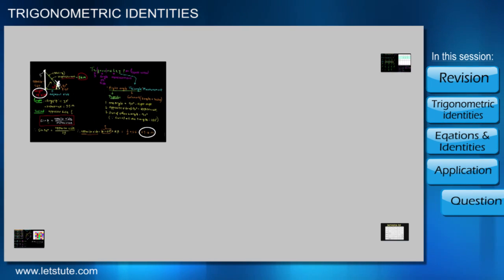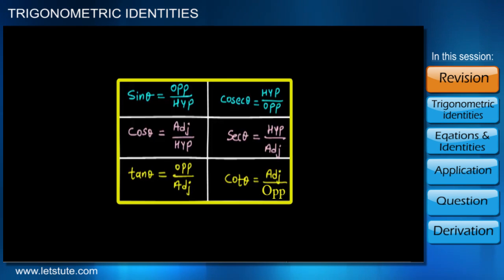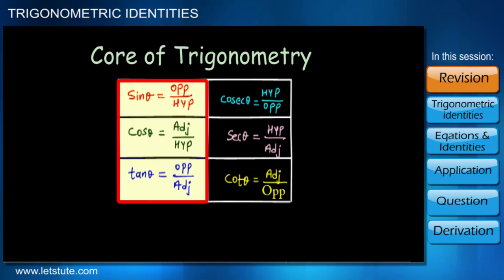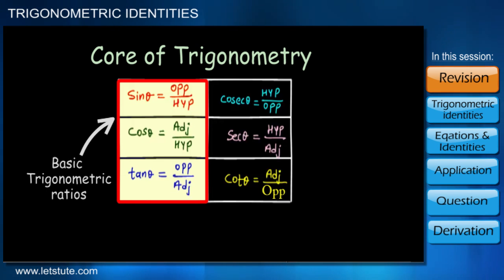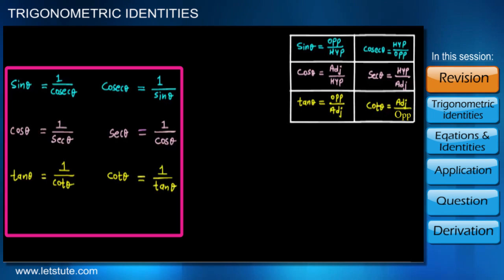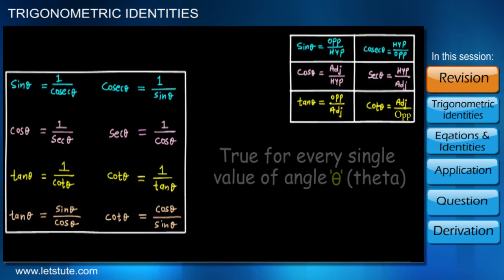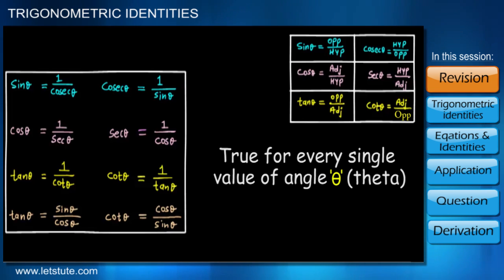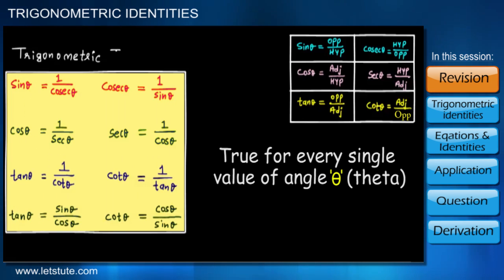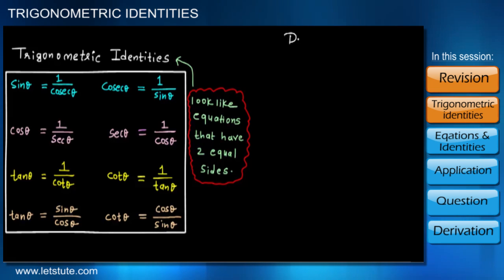In our previous sessions we have learned many things in trigonometry. We have understood that these six trigonometric ratios are the core of trigonometry, where sine, cos, and tan are called basic trigonometric ratios. The other three are just their reciprocals. We also know that tan is the ratio of sine and cos, so we write cot as cos upon sine. These relations are true for every single value of theta and are called trigonometric identities.